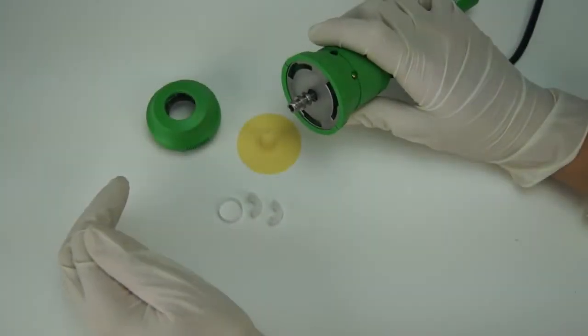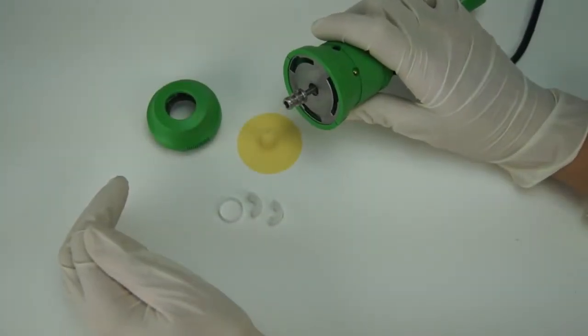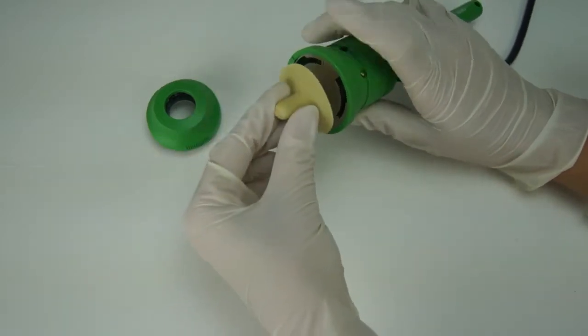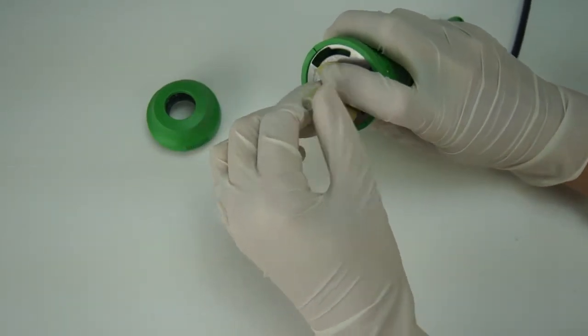The first step in attaching the lead screw protector is to extend the lead screw approximately one inch. Then attach the lead screw protector until securely seated.